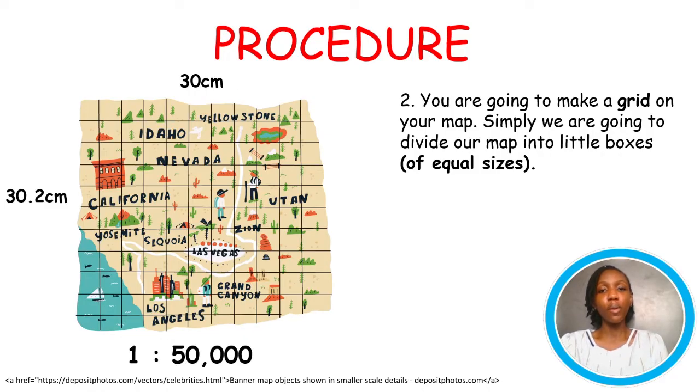Next, we're going to make a grid on the map. Simply, we're going to divide our map into little boxes. 10 boxes both horizontally and vertically should be ideal for any map. But anything that works for you. But you need to remember not to make too few boxes and not too many either. This is because if the boxes are too few, you won't be able to accurately draw the required features asked of you. And if there are too many, it'll just be a waste of time which you don't have.